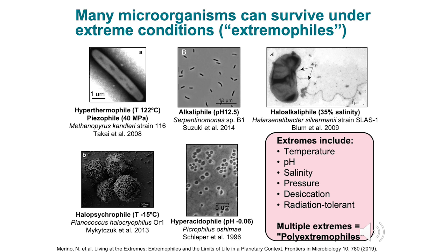Extremes include temperature, pH, salinity, pressure, desiccation or extreme dryness, and radiation tolerance. Here are five microscope images of microbes that can survive under the most extreme conditions — these are the current record holders. For example, Methanopyrus kandleri can grow at temperatures up to 122 degrees Celsius, which is way above boiling water. But because of high pressure, the water where this microbe is naturally found does not boil, so this microbe can survive both high temperatures and high pressure. Because it can survive multiple extremes, it is also known as a poly-extremophile.